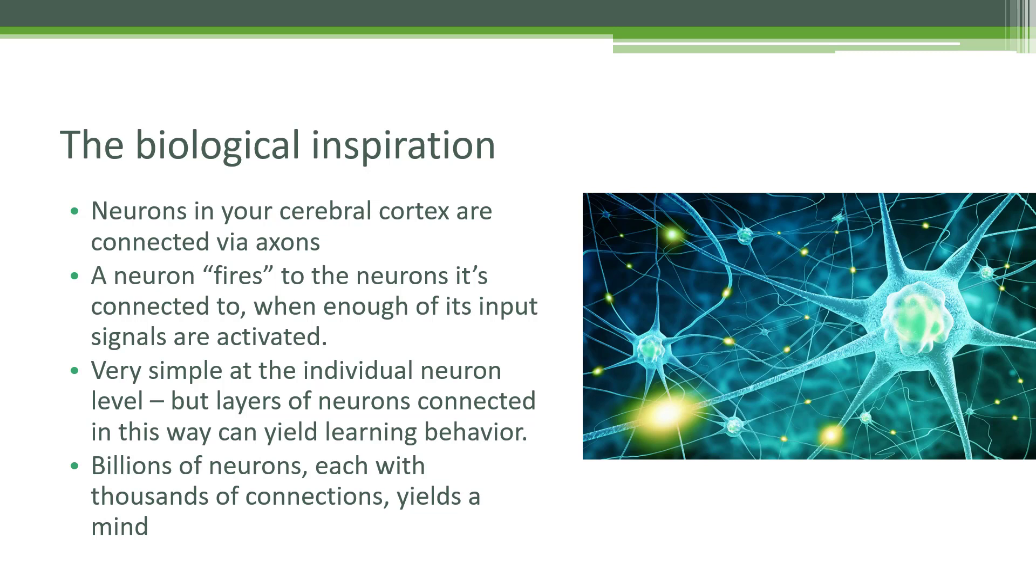Within your brain, specifically your cerebral cortex where all of your thinking happens, you have a bunch of neurons. These are individual nerve cells connected to each other via axons and dendrites. An individual neuron will fire or send a signal to all the neurons it's connected to when enough of its input signals are activated. At the individual neuron level, it's a very simple mechanism.